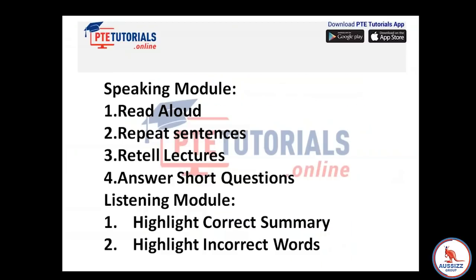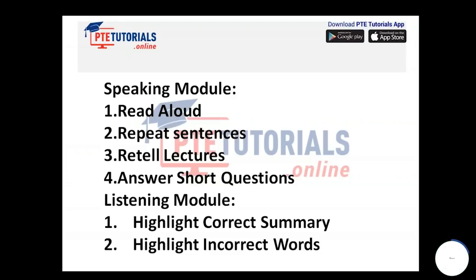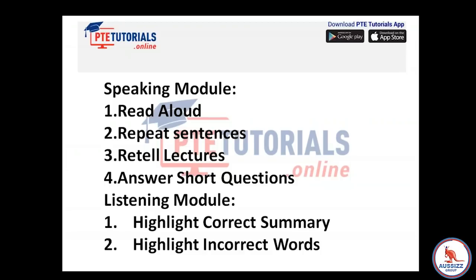In the speaking module we have four question types: read alouds, repeat sentences, retell lectures and answer short questions. From these four tasks you get either reading or listening score. On the other side, in the listening module there are two tasks from where you get your reading score. I'll tell you the strategies too so that you can enhance your skills.